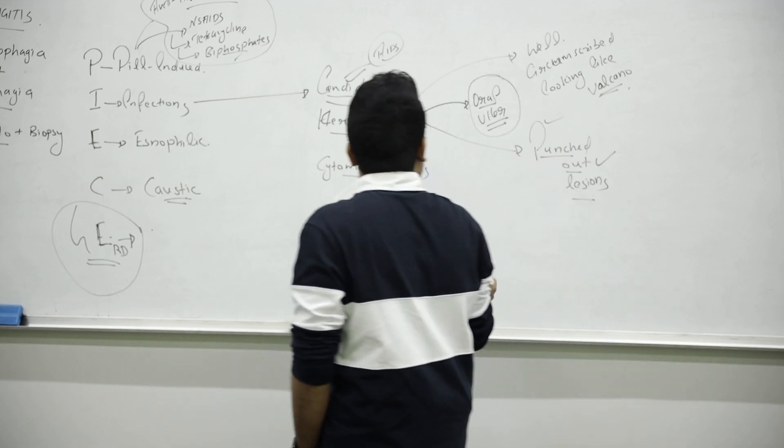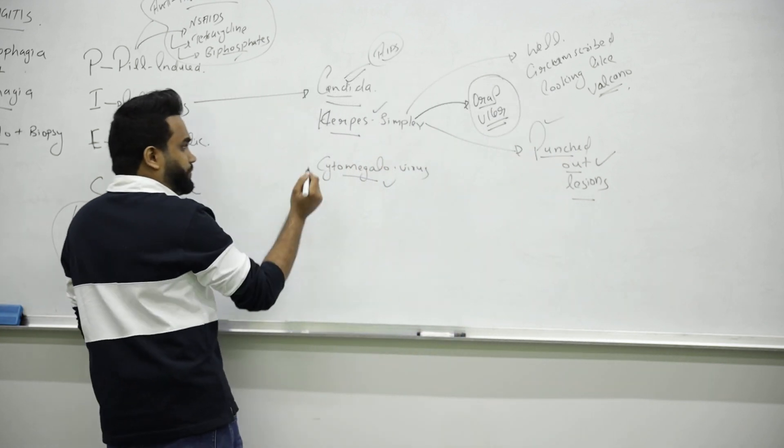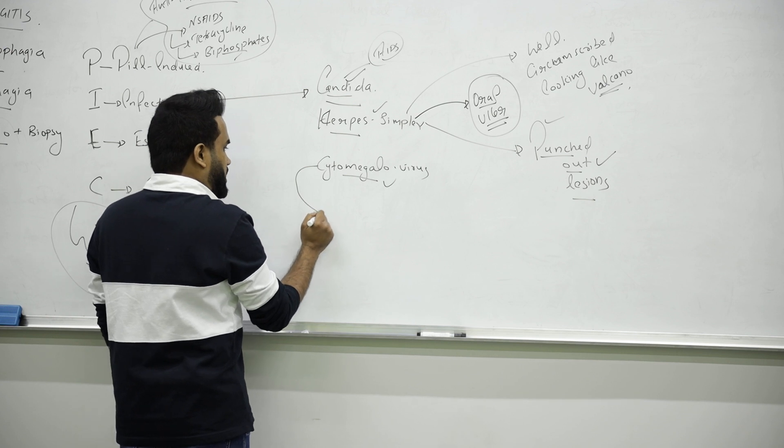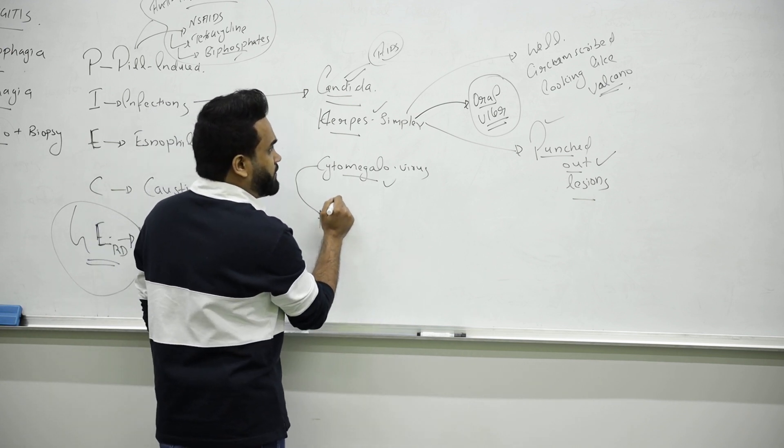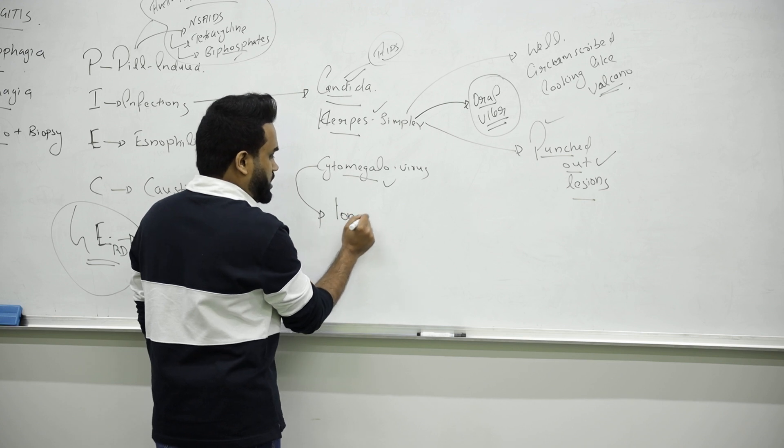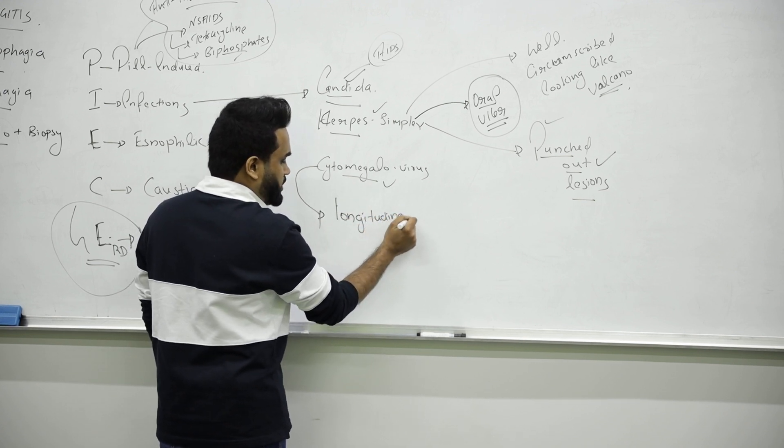Well circumscribed looking like a volcano - something like well circumscribed, punched out. Then we have cytomegalovirus. In cytomegalovirus, what ulcer? Longitudinal ulcer.